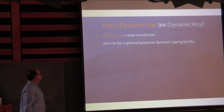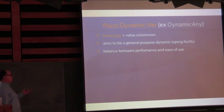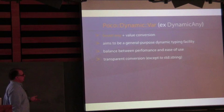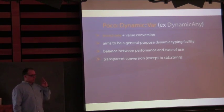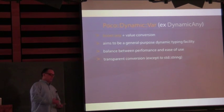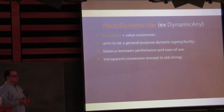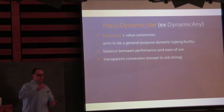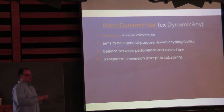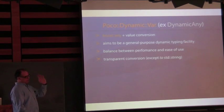POCO Dynamic Var aims to be a general-purpose dynamic typing facility. It balances performance and ease of use. It provides transparent conversion, though my one issue is with std::string — I can't directly assign a Var to std::string because depending on the compiler and version, std::string gets confused whether to take it as std::string or char star. You're safer to do toString and then it does the right thing.